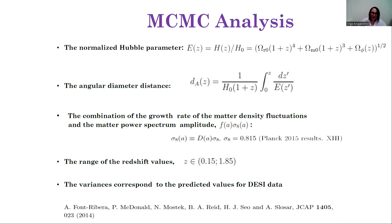Using the predicted data from the Dark Energy Spectroscopic Instrument called DESI observations, the MCMC analysis was based on calculated values of the normalized Hubble parameter, the angular diameter distance, and the combination of the growth rate of matter density fluctuations and the matter power spectrum amplitude for each φCDM and ΛCDM model in the redshift ranges. Our variances correspond to the predicted variances for DESI observations.